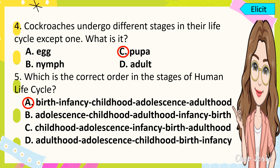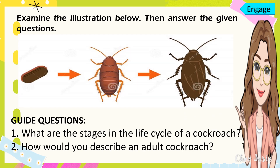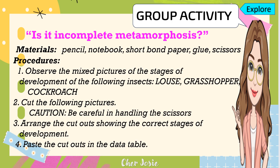I do hope you got a perfect score. Please examine the illustration below and answer the given questions. What are the stages in the life cycle of a cockroach? How would you describe an adult cockroach? And now, it's time for your group activity, entitled: Is it Incomplete Metamorphosis?